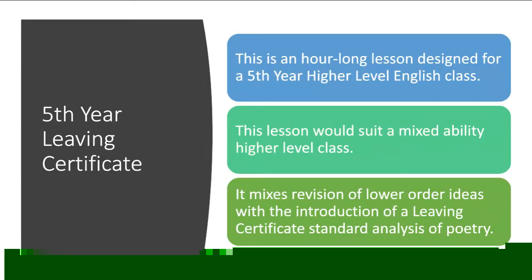This is an hour-long lesson designed for a higher level fifth year class. The class is mixed ability and there's a range of different learners — 24 students in total. The class caters to the less able students as well as those who better grasp the concept of poetry. The teacher will differentiate in the lesson by asking higher and lower order questions and using exercises which can be tailored to suit any level of learner.